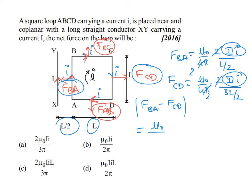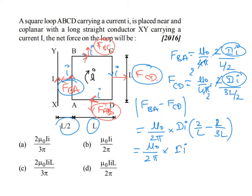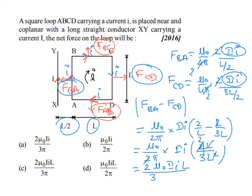Subtracting: F_BA − F_CD = (μ₀/2π) × I² × [2/(L) − 2/(3L)] = (μ₀/2π) × I² × (2/3L) × (3 − 1) = 2μ₀I²L / (3π). Therefore the net force is 2μ₀I²L / (3π), and option C is the right answer.